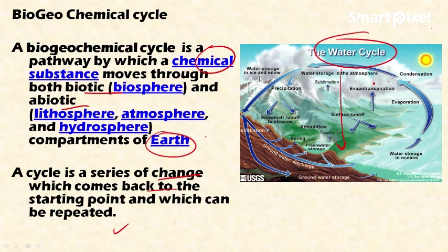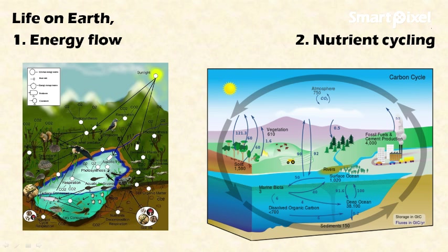Before going into detail about biogeochemical cycles, let's distinguish between energy flow and nutrient cycling — the two important functions of the ecosystem. For more detail on ecosystem functions, please visit my previous videos.